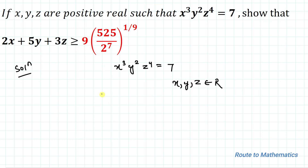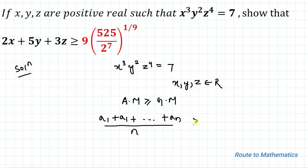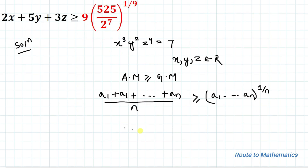Whenever we are asked to find the minimum value of an expression, the first thing that comes to mind is to apply the AM-GM inequality — that is, the arithmetic mean must be greater than or equal to the geometric mean. The arithmetic mean is the sum of n terms divided by n, which must be greater than or equal to the product of the n terms to the power 1/n. Here we have 2x + 5y + 3z.